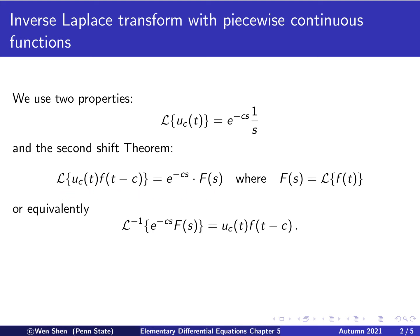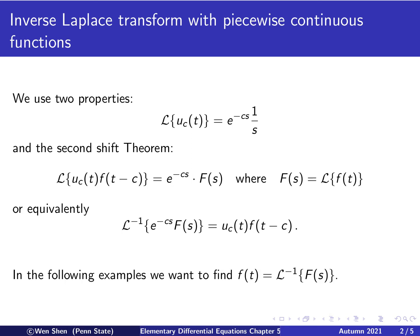This relation can also be written in a reversed way: if this is the Laplace transform of that, then the inverse Laplace transform of this is exactly that. This will be very useful for solving differential equations. In the previous video, we focused on finding the Laplace transform of functions with possible discontinuity or piecewise-defined functions. Now in this video, we will focus on how to find the inverse Laplace transform, which will possibly give a function that is piecewise defined.